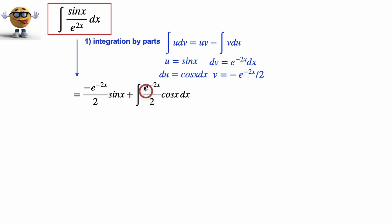Now it looks like this didn't help, right? We just took this integral and exchanged it for another one that's almost the same, except we have a cos here instead of a sin. But what we're going to do, and this is the trick, we're going to do integration by parts again, believe it or not.